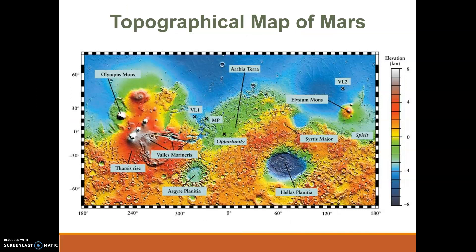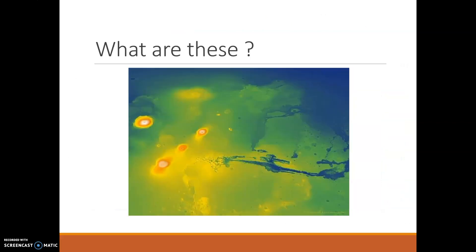This topographical map shows the different pits and valleys that we can see on Mars. As we get higher, it turns to that red or gray color, and as we go lower, it's a darker blue — just to show the different highs and lows on the planet.